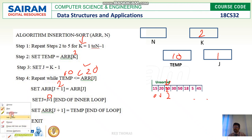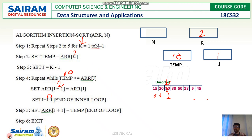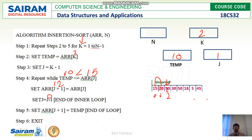With j now 0, array[j] is 15. We compare: is 10 less than 15? Yes. So array[j+1] = array[j]: j+1 is 1, so 15 is shifted to position 1. Then we set array[j+1] = temp, placing 10 at position 0. At the end of this iteration with k = 3, element 10 is inserted in its correct position in the sorted array.